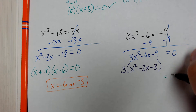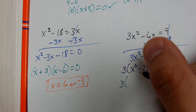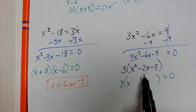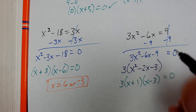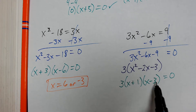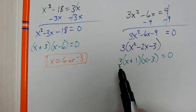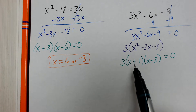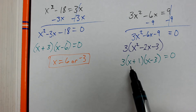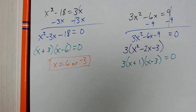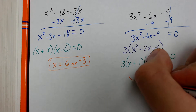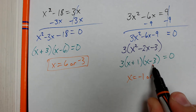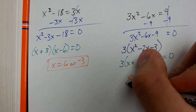Now I factor the quadratic inside: I still have 3 on the outside, then x and x inside. Factors of 3 that add up to negative 2 are 1 and 3 — specifically minus 3 and plus 1, since 1 times negative 3 is negative 3, and negative 3 plus 1 is negative 2. The 3 on the outside doesn't affect our x values — if either parenthesis equals zero, the whole expression is zero. Applying Zero Factor Theorem: x equals negative 1, because negative 1 plus 1 equals zero, or x equals positive 3, because positive 3 minus 3 equals zero.